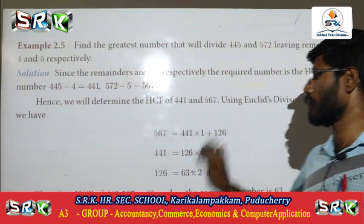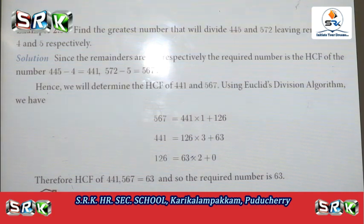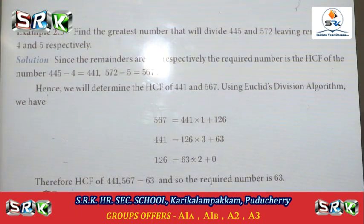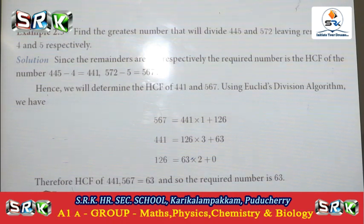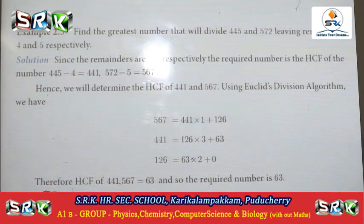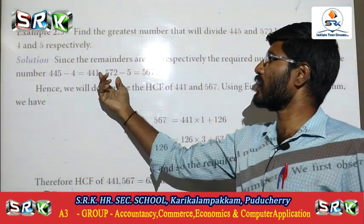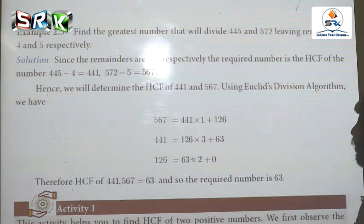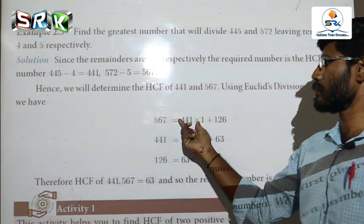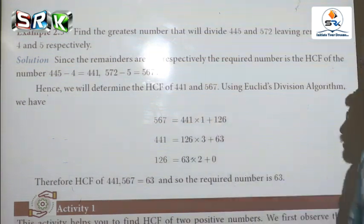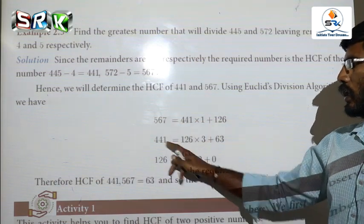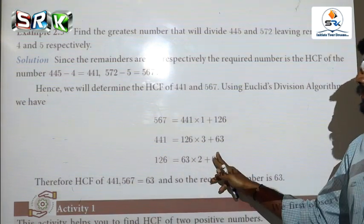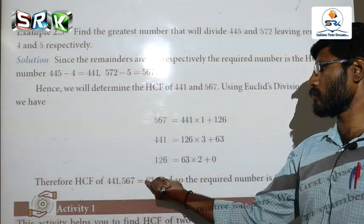Example 2.5: Find the greatest number that will divide 445 and 572 leaving remainders 4 and 5 respectively. The required number is the HCF of (445 minus 4) and (572 minus 5), that is HCF of 441 and 567. Applying the algorithm: 567 equals 441 times 1 plus 126. Then 441 equals 126 times 3 plus 63. Then 126 equals 63 times 2 plus 0. Therefore the HCF is 63.